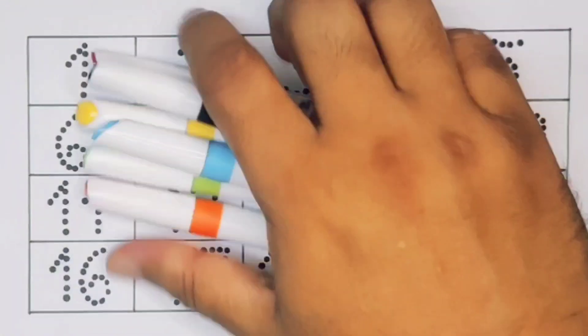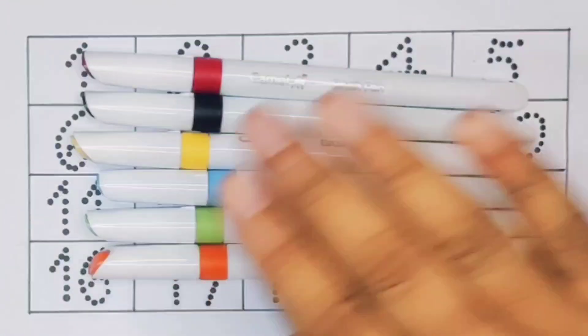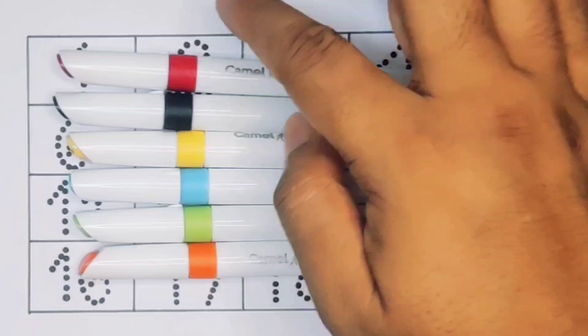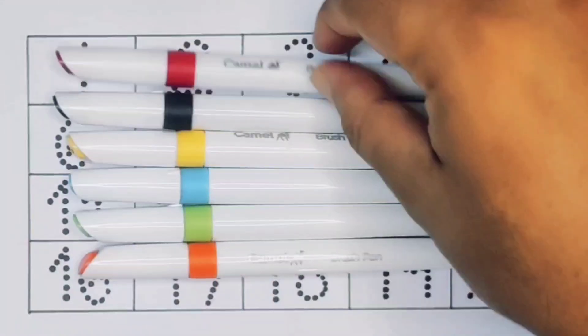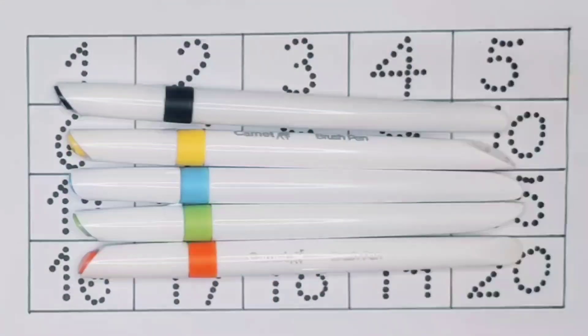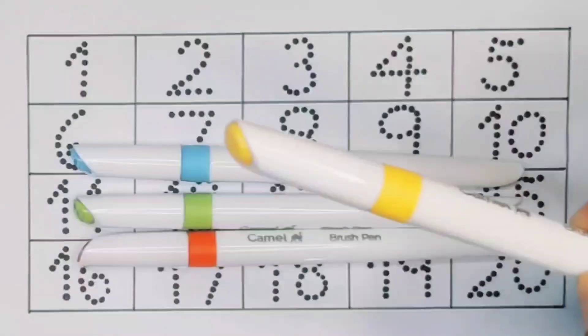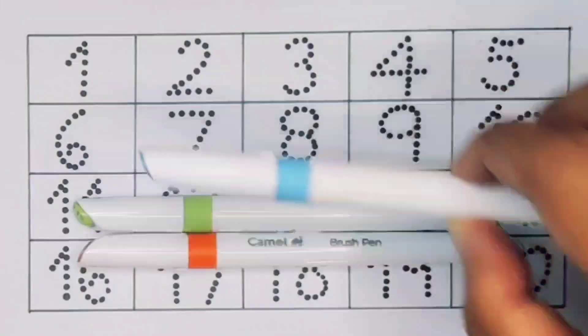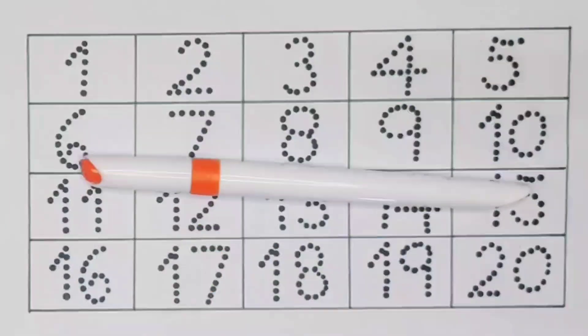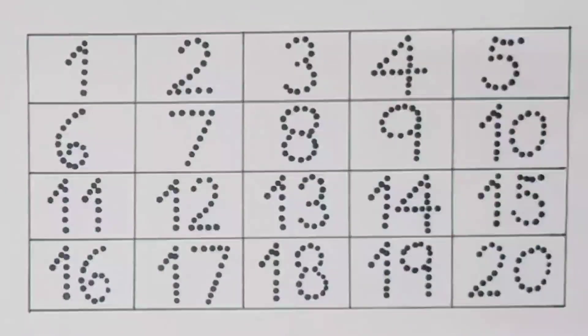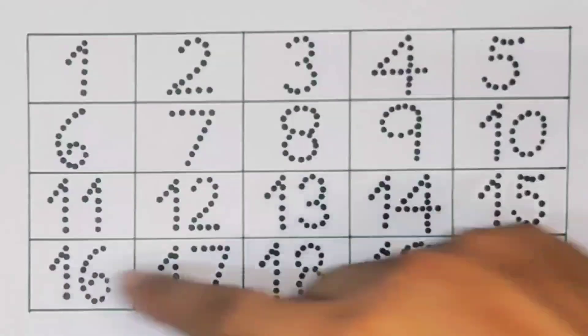Hello kids, welcome to my new video. First we're going to know the color's name: red color, black color, yellow color, sky blue color, green color, orange color. Now let's learn the numbers counting one to twenty.